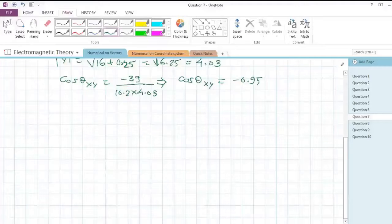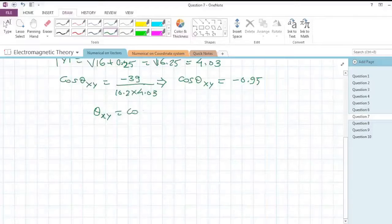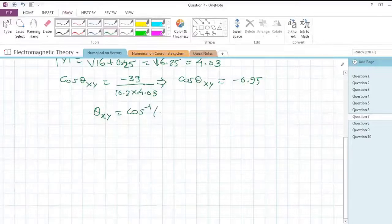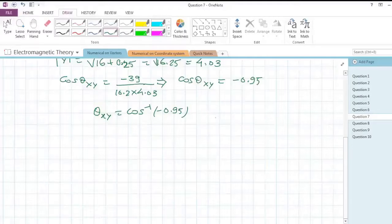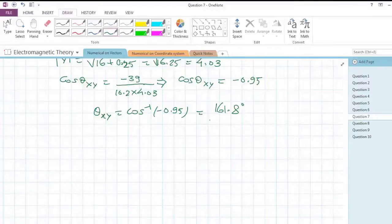To find out theta_xy, we'll do cos inverse of -0.95, which will be 161.8 degrees. So the angle between the force and the displacement is 161.8 degrees.